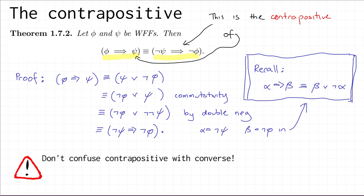I said that having the contrapositive logical equivalence is useful in actual proofs, because instead of proving A implies B you can instead prove NOT B implies NOT A, and sometimes that's easier. For example, consider the statement: x squared is irrational implies x is irrational. As written, that's quite tricky to prove because irrational numbers don't have one specific form — they can be all sorts of strange things. So you're a bit stuck when you try to prove this directly.